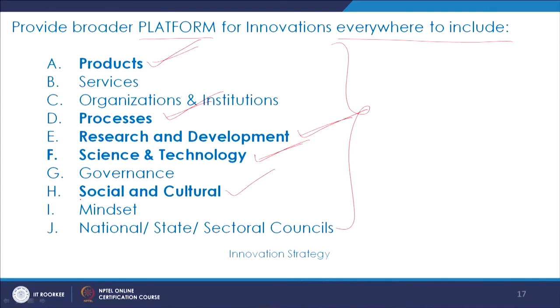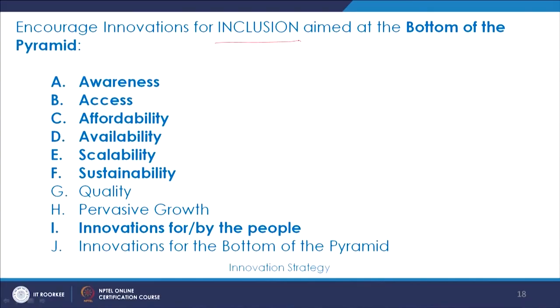As discussed, innovation does not just mean science and technology — it also has to impact social change and take a community and cluster into consideration along with their way of life. The node of inclusion is aimed at the bottom of the pyramid, and it focuses on awareness, access, affordability, availability, scalability, sustainability, and innovations for and by the people.